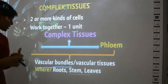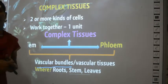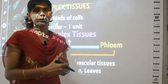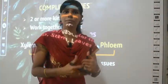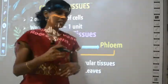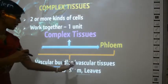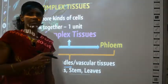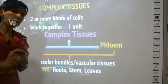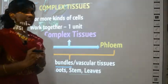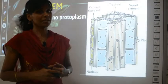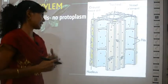Before studying xylem and phloem in detail, where are they present? You can find xylem and phloem in three parts of a plant: the roots, the stem, and the leaves. All three parts have both xylem and phloem. Now we will study the structure of xylem.